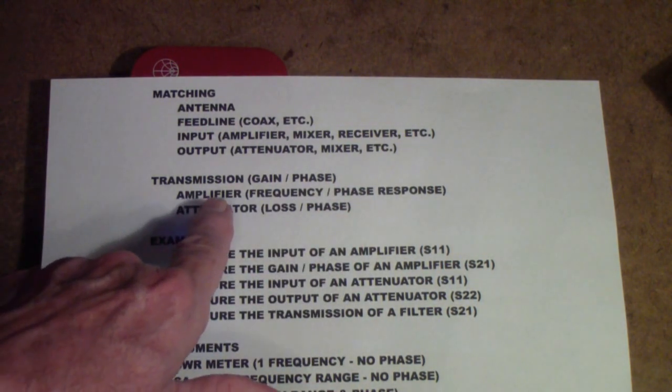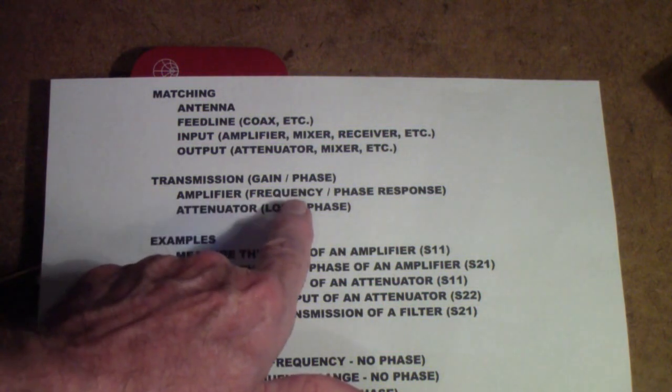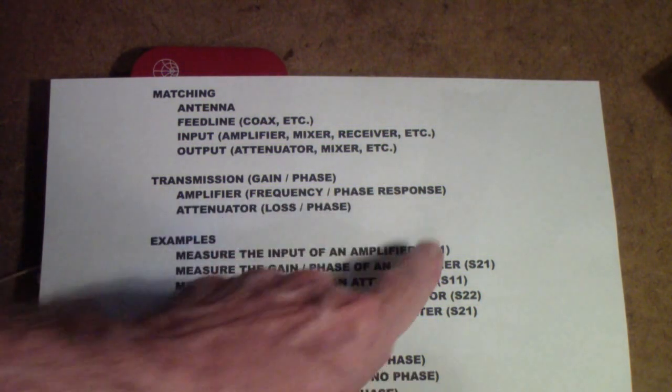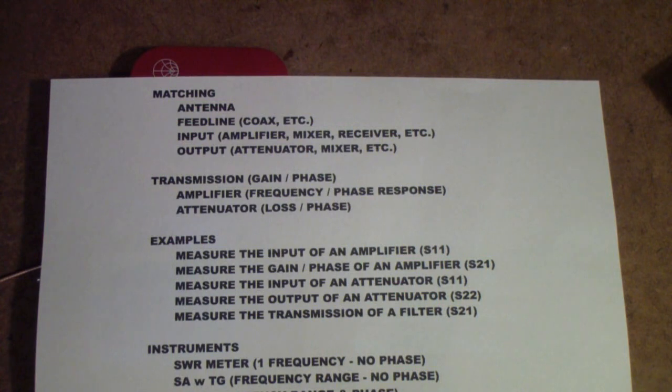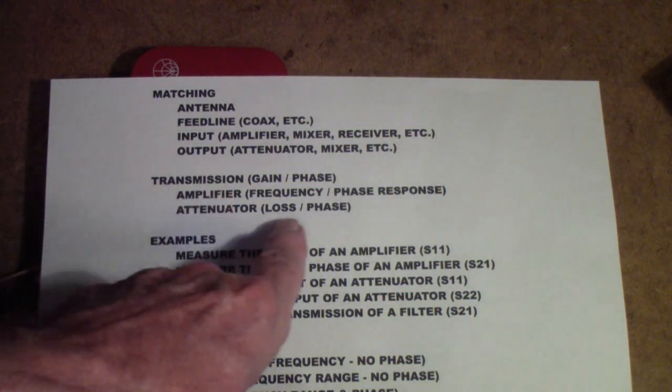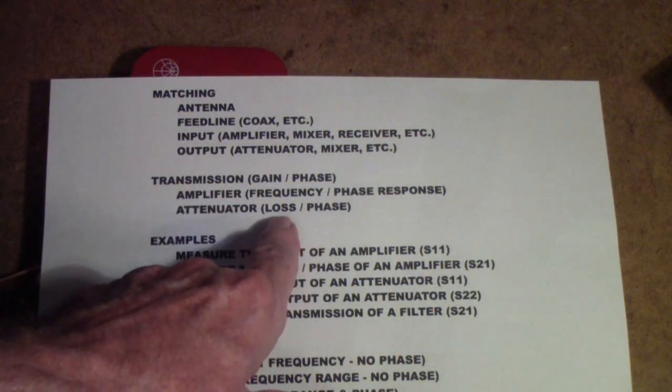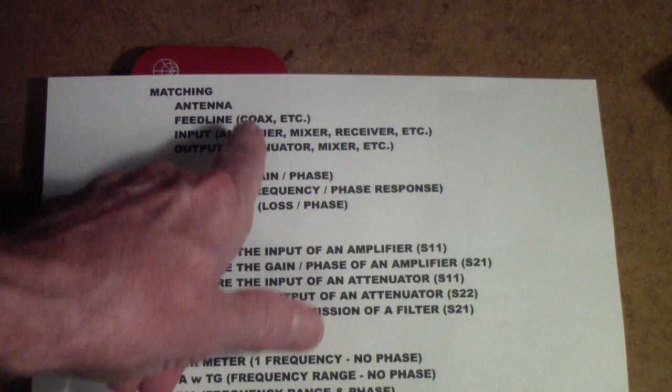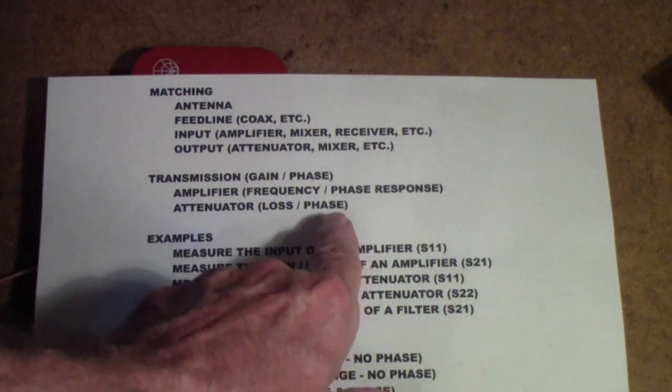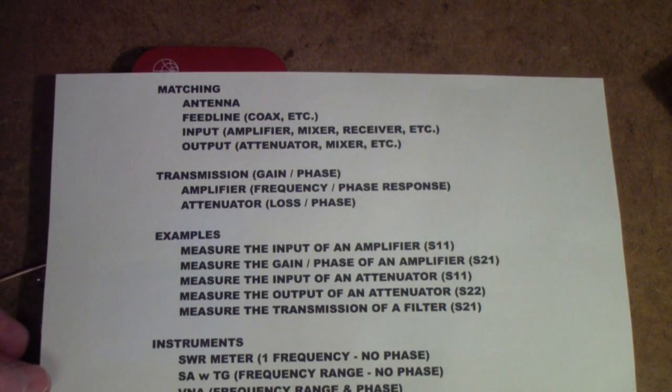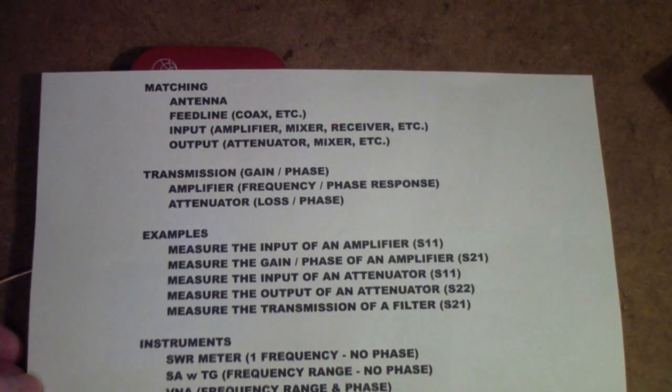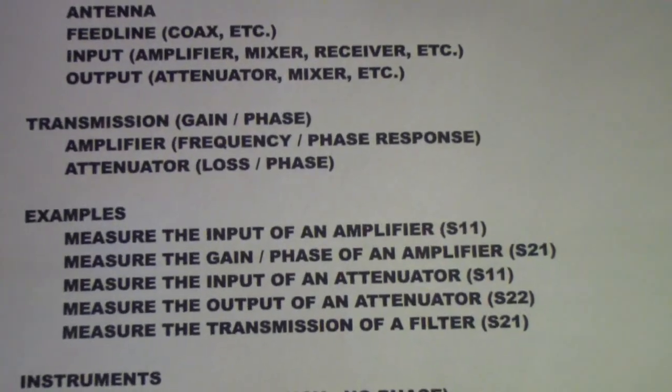Examples of where you might use this is an amplifier, looking for the frequency and phase response. You put in a signal and then you measure the output over a range of frequencies, and you want to know how much has the gain changed and how much has the phase changed. Similarly, an attenuator, for example, you might want to know how much is the loss at a particular frequency or a set of frequencies, and what is the phase change.